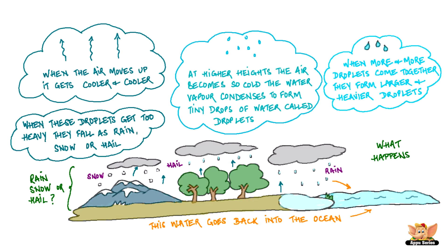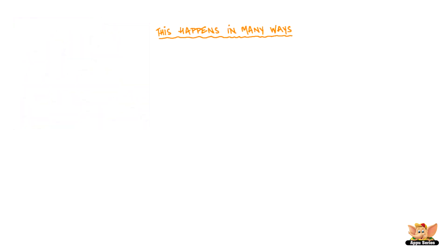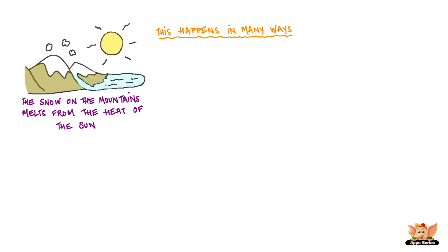This water goes back into the ocean. Now this happens in many ways. The snow that falls on mountains melts again with the heat of the sun. The water flows down the mountains as rivers or streams.